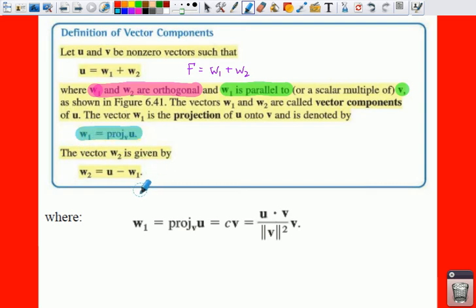In order to find out what your W sub 2 is, you would just take your U minus W sub 1. If you were to solve this equation for W sub 2, then all you do is subtract W sub 1 to both sides. You're going to be able to find your W sub 1 by using your projection, and you're going to know what your U is because that would be given to you.